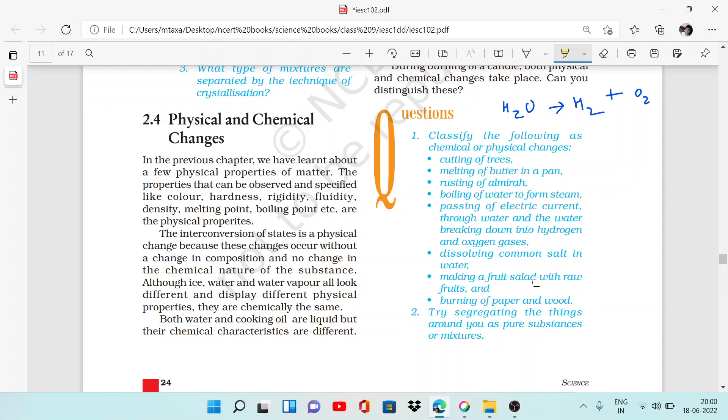Making fruit salad with raw fruits—if you cut the fruit and there's no moisture contact, then there's no chemical reaction, only physical change. But if your cut parts have moisture contact, chemical reaction can occur. Burning of paper and wood is obviously a chemical change.